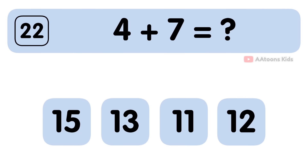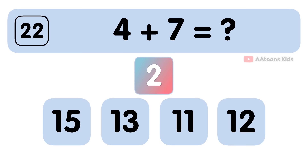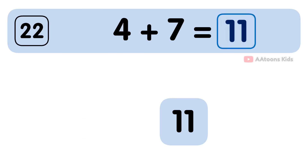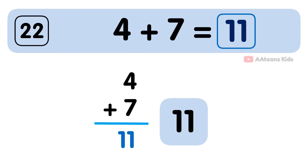4 plus 7 is equal to 11. The answer to 4 plus 7 is 11.